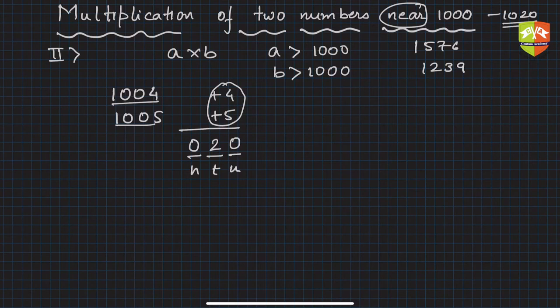Okay, so that's done. Rest is as we have been doing so far: 1004 plus 5, that is 1009. So the product of these two three-digit numbers is 1009020.